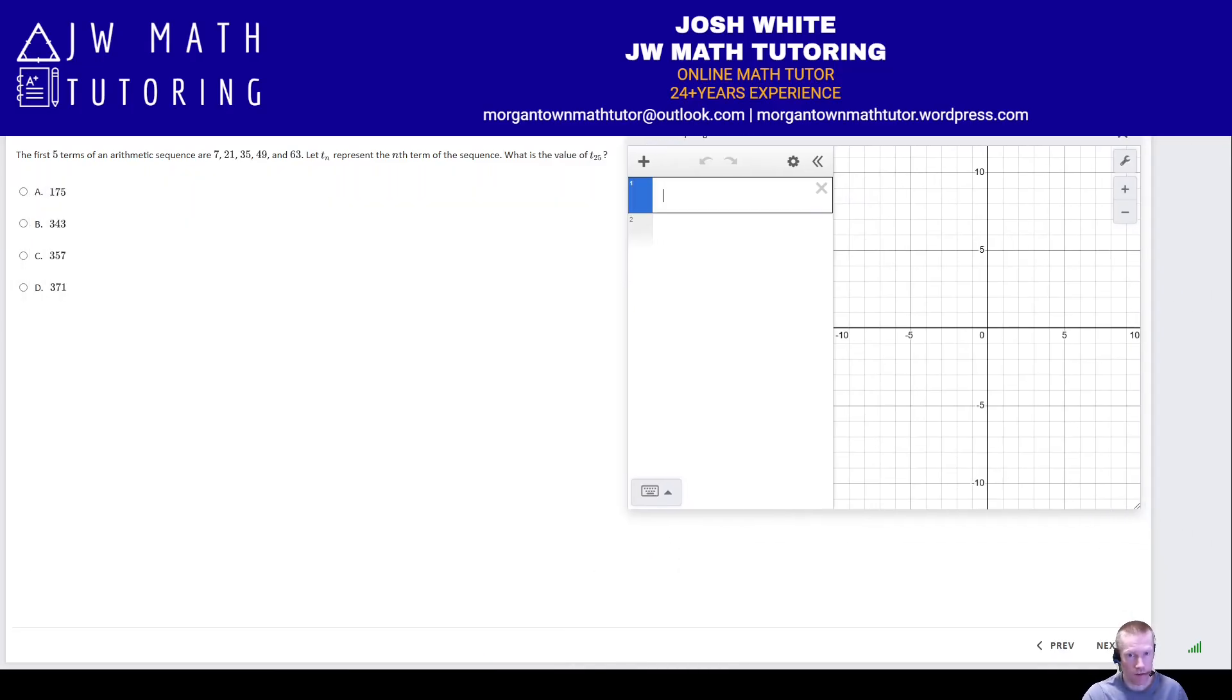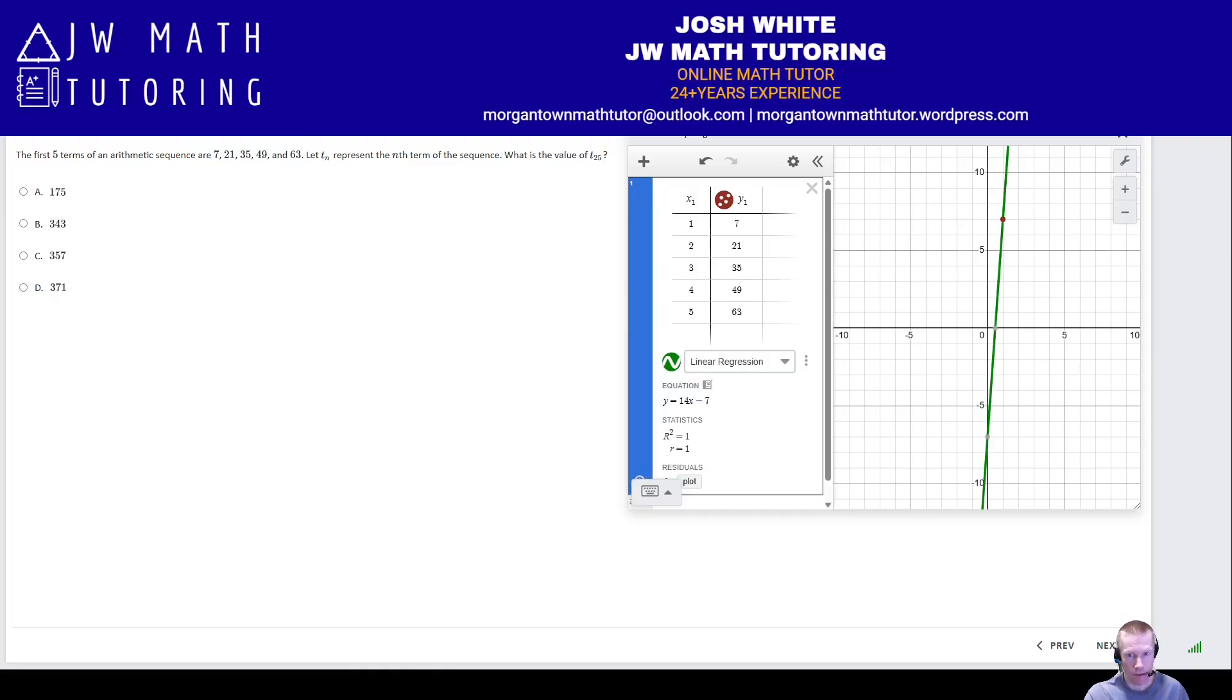All right, so this is an arithmetic sequence problem. So the thing is, arithmetic sequences are really just linear functions. Because the way an arithmetic sequence works, right, you're adding the same value to each consecutive term. So all we need to do is add a table and put in some of these points. So the first term, term 1, is 7. The second term is 21. The third term is 35. We don't need any more, but I'll just enter them all in, just because we're giving them. Fifth term, 63. Okay, now you can just click the linear regression button, although personally the way I prefer to do it is I prefer to type it.